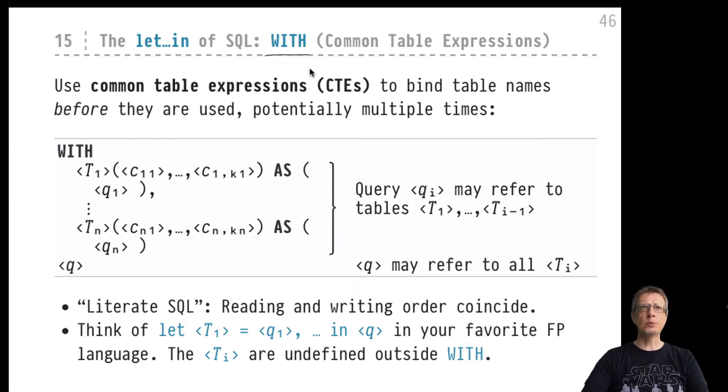Common Table Expressions in SQL really behave like let-in in your favorite functional programming language, or the local bindings you can introduce in your favorite programming language. This would be the WITH construct, which introduces the entire query block and ends with this top-level query Q. The overall result of the whole Common Table Expression, of this whole WITH expression, would be the result of Q. Inside Q, however, we can refer to locally, temporarily defined tables T1, T2, T3, up to Tn.